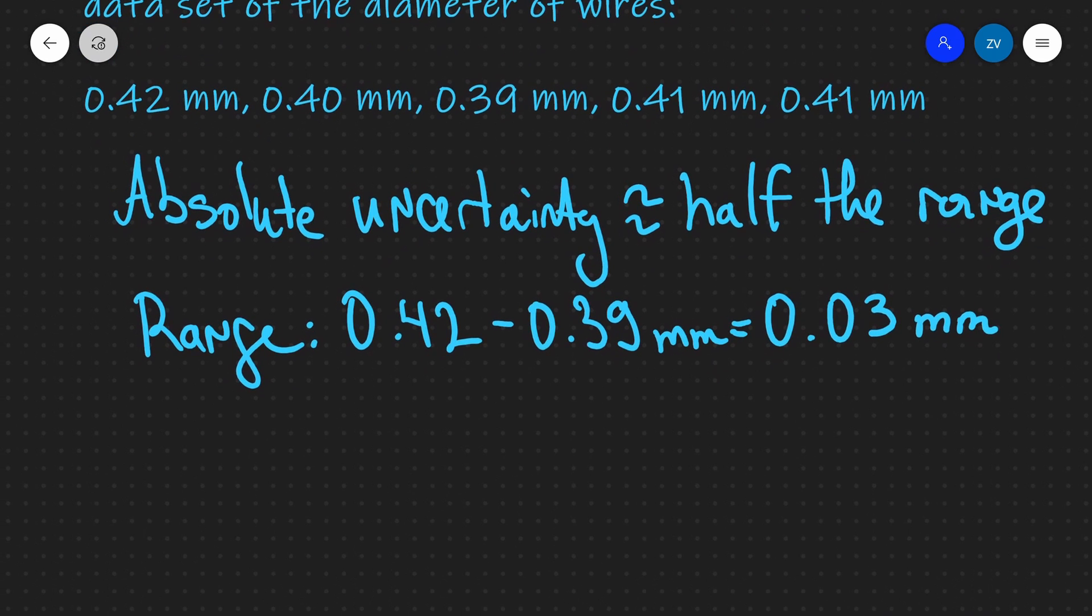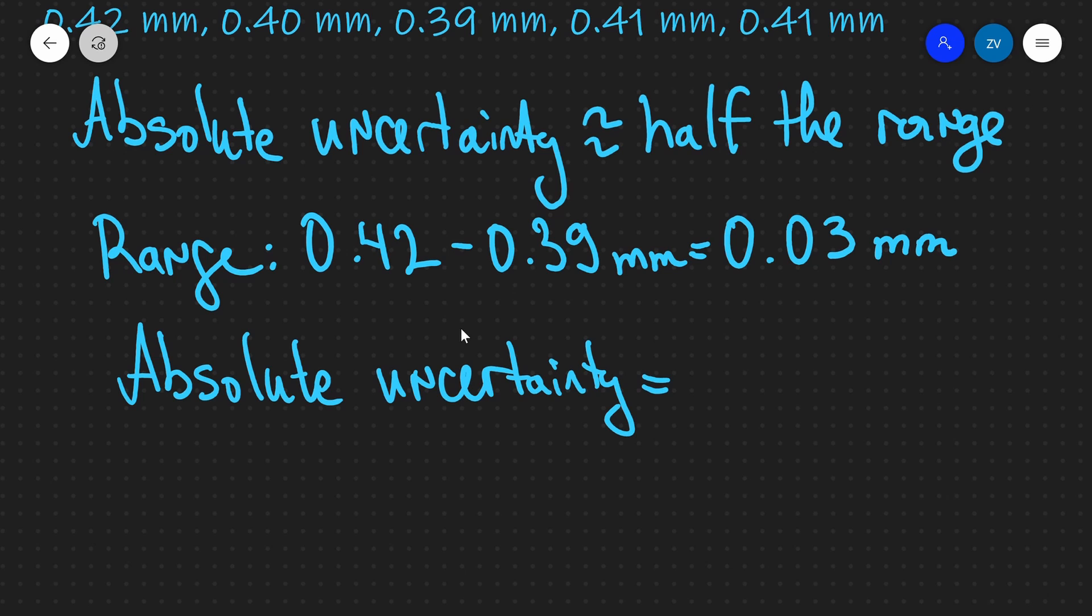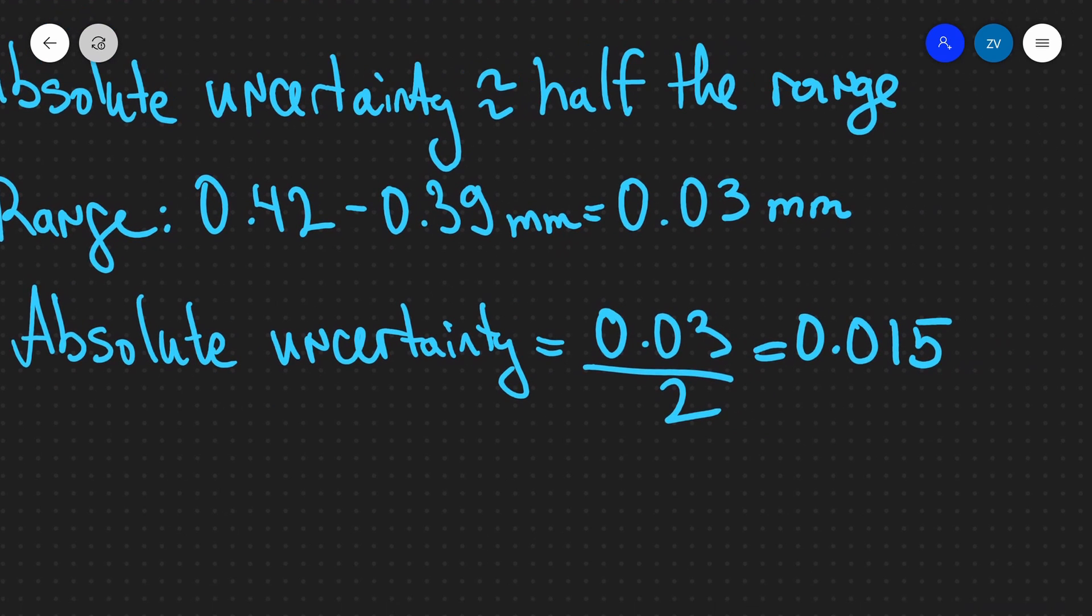Half of that means we can approximate our absolute uncertainty. Let's write that down. Our absolute uncertainty is going to be half of that, which is 0.03 divided by 2, which equals 0.015 millimeters.